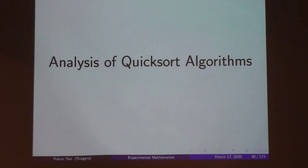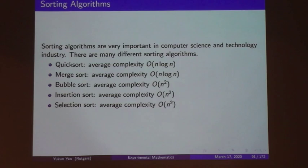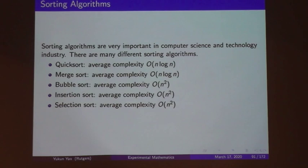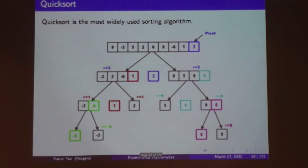Now let's use experimental mathematics to analyze quicksort algorithms. Sorting algorithms are central to computer science. We focus on quicksort — the most widely used sorting algorithm. The idea: randomly choose a pivot element, compare each other element with it, place smaller elements to the left and larger ones to the right, then recursively sort the two sub-lists. Other algorithms like merge-sort, bubble-sort, insertion-sort, and selection-sort have O(n²) complexity and are less efficient for large n.